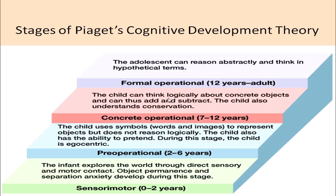Egocentrism means the child is not able to view the perspective of another person and only considers his or her own perspective. For example, if a child is talking to a parent over the phone, the child may nod his or her head as if the parent can see that behavior, or a child watching television tries to show something to a parent in the kitchen without realizing the parent cannot see the visual. Gradually children overcome this egocentric behavior.